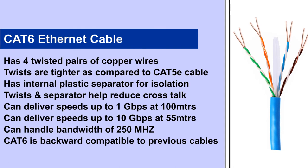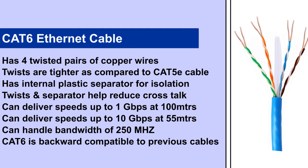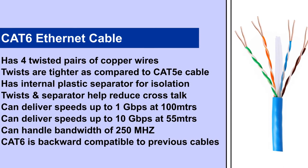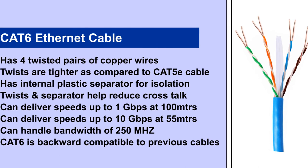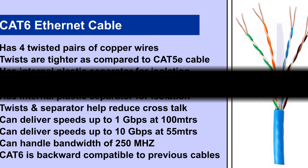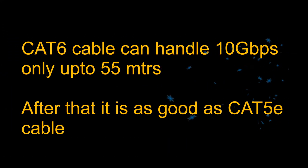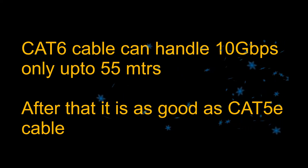Cat6 can handle a bandwidth of up to 250 MHz. Cat6 cable can work on a Cat5 network — it is backward compatible with previous specifications, which means it can be effectively used with Cat5 network, so you can mix and match. However, Cat6 cable can handle 10 gigabit speed only up to 55 meters, after which it drops down to one gigabit, which is the same as Cat5e.